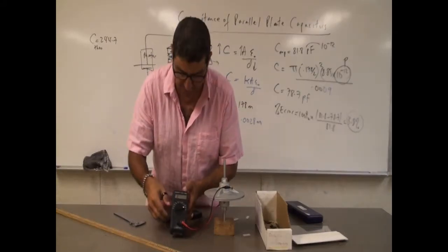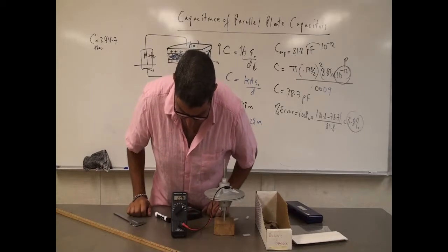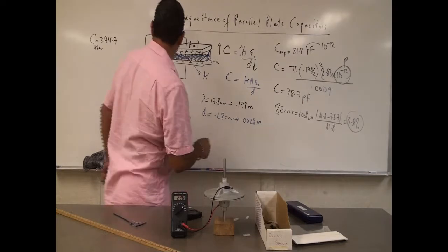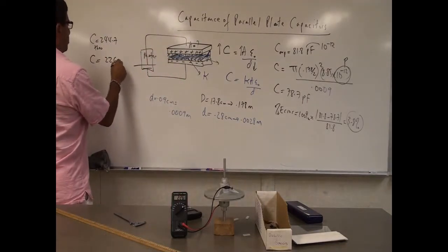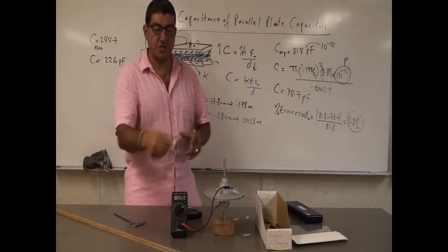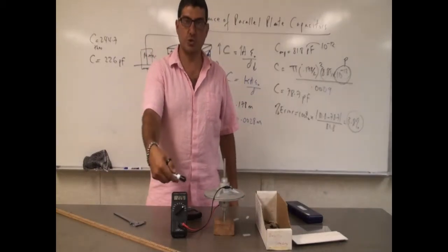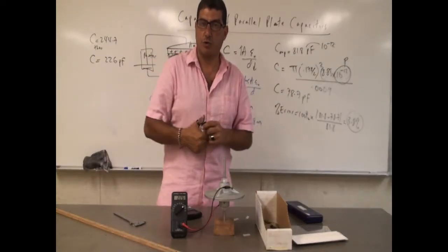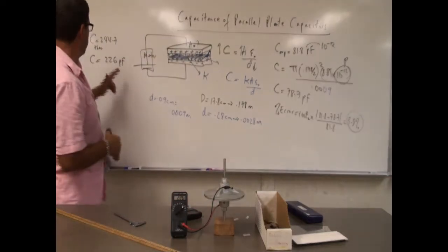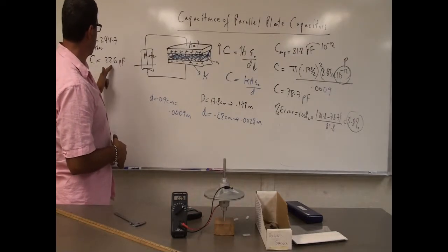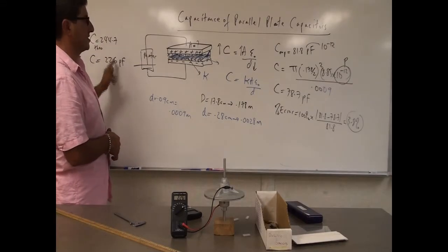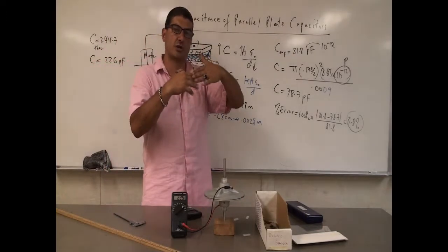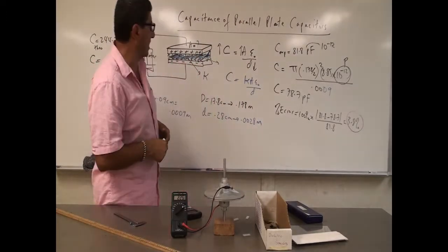Since it's past 200 picofarads, I go to the 2,000 scale, which reads 226 picofarads. It might be a good idea to re-zero the instrument each time for a more accurate result — I didn't do that here. Without re-zeroing, I'm still getting a pretty good result. It is considerably larger than when the distance was bigger, confirming that when the distance is smaller, the capacitance goes up.